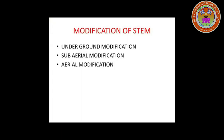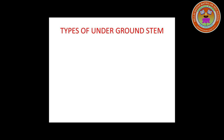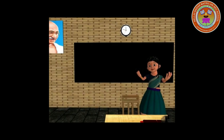It is modified into three important types: underground modification, sub-aerial modification, and aerial modification. In Underground Modification of Stem, the whole stem is buried under the ground and it has definite growth. Usually, stem grows above the ground but there are some stems that grow under the ground to store food. These underground stems swell and become thick.